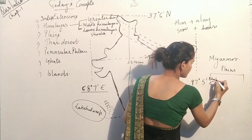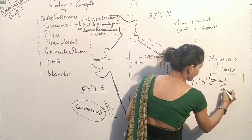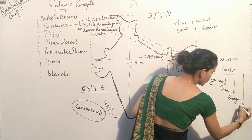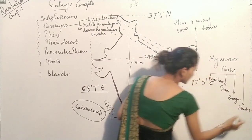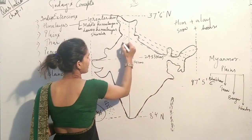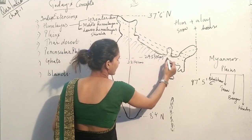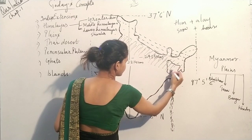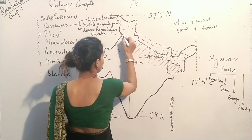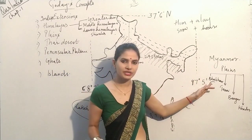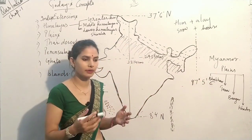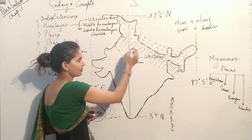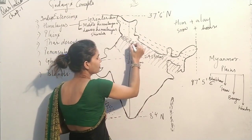The four parts of the plains are: first, Bhabar; second, Tarai; third, Bangar; and fourth, Khadar. These are formed at the foothills of the Himalayas by the main rivers — Indus, Ganga, and Brahmaputra. The Bhabar is a thin strip of plain made up of pebbles or small stones. When small stones and pebbles are deposited at the foothills of the Himalayas, they form the Bhabar.